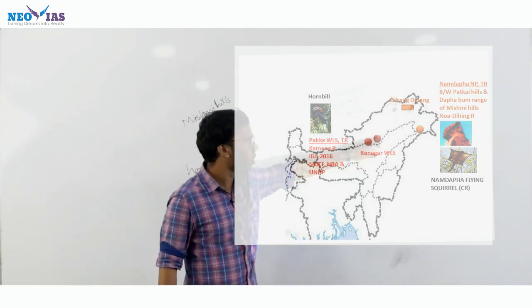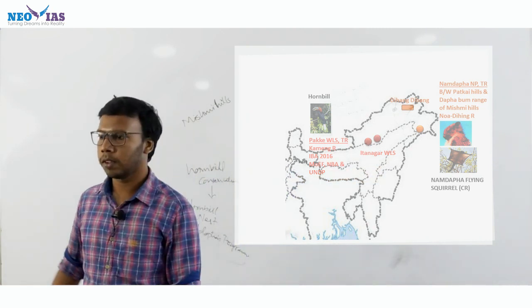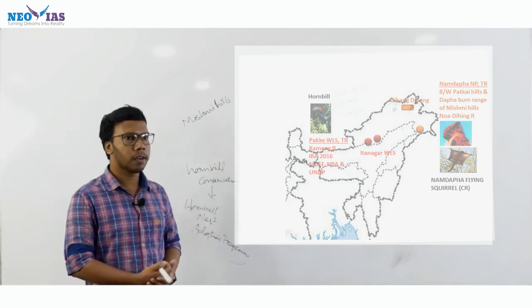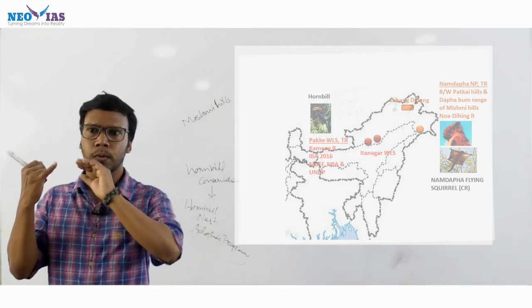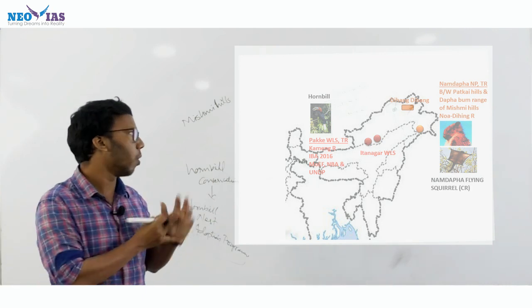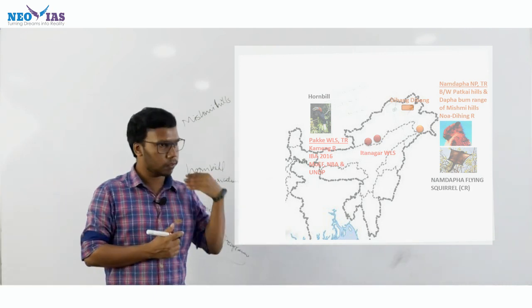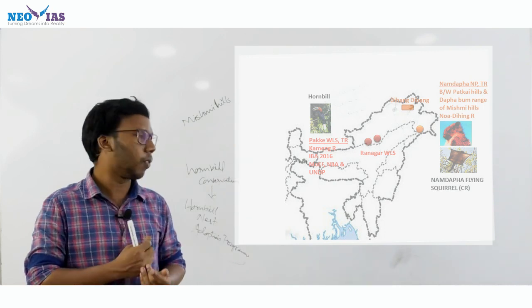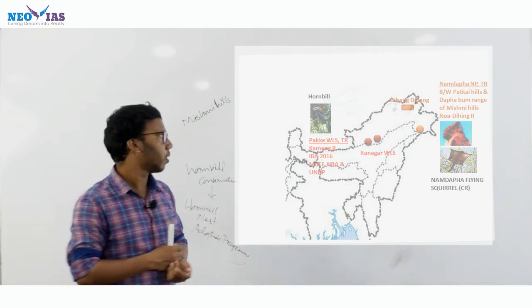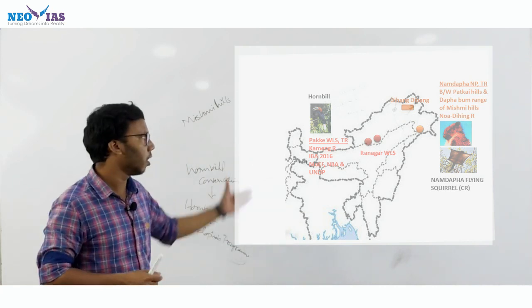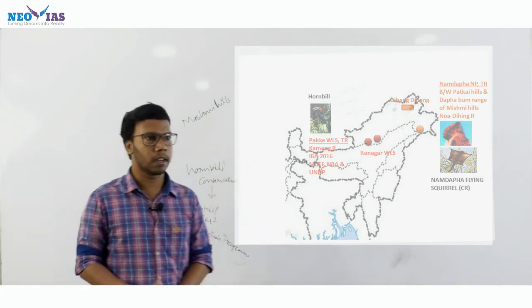Then, Itanagar — we are having a wildlife sanctuary there. So, these are the protected areas in Arunachal Pradesh: Dibang Biosphere Reserve, with two cores — Dibang Wildlife Sanctuary and Mowling National Park. In between Mishmi Hills and Patkai Hills, we are having Namdapha. To the west of Arunachal Pradesh, we are having Pakke Wildlife Sanctuary and Itanagar Wildlife Sanctuary.